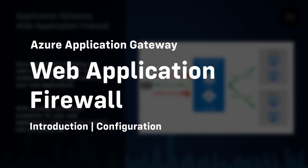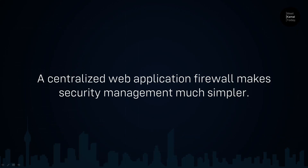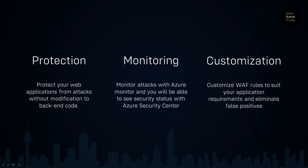In this video we are going to learn about web application firewall, which is a feature of Azure application gateway. Azure application gateway is a web traffic load balancer that enables you to manage traffic to your web applications. Web application firewall provides centralized protection for your web applications from common exploits and vulnerabilities, making security management much simpler.